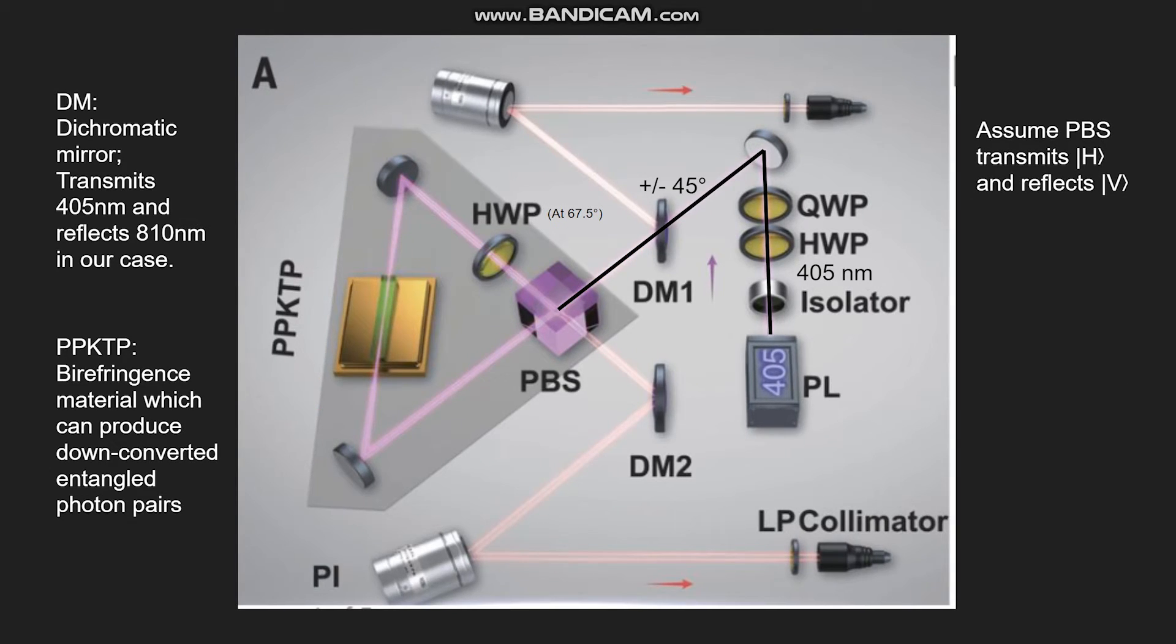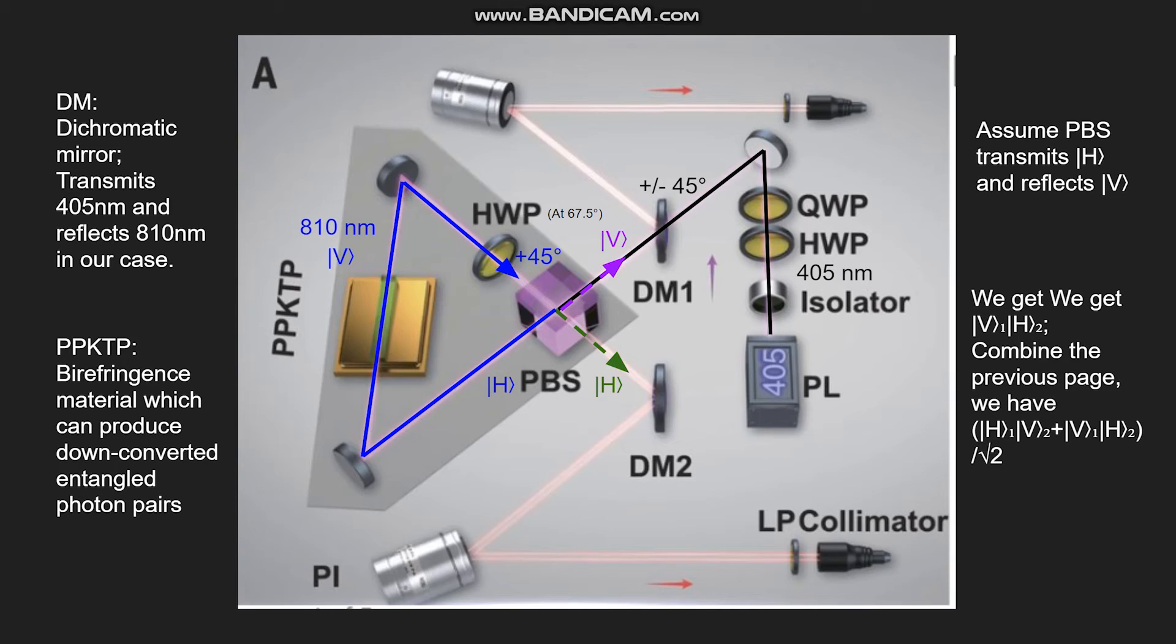So let's now see the H trace. The H polarized light went through the PBS and then is reflected into the PPKTP. After the PPKTP, it is then down-converted into entangled photon pairs at 810 nanometers, which have a V state. And then after reflected by this mirror and it goes through the half-wave plate, it becomes plus 45 degrees. And then it goes through the PBS. At the PBS also, another process shows up. So in this case, the V gets reflected and the H passes through. So in this case, for the upper perimeter, we have a V state. And for the lower perimeter, we have an H state and they are entangled. So in this case, we have a V1 H2 state and by combining this one and the previous case, we have a total H1 V2 plus V1 H2 divided by square root of two state.